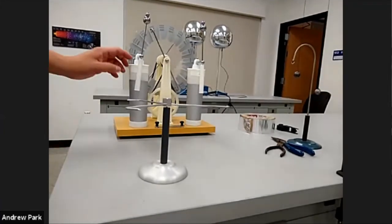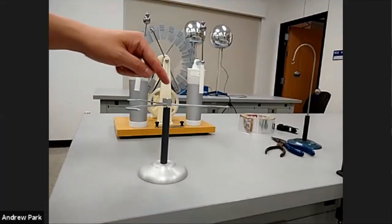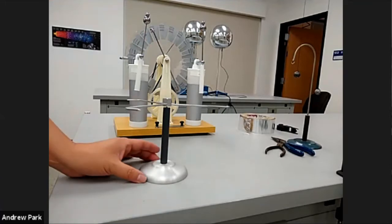Connect a wire from one of these two electrodes. There's a hole where I can connect it to this vane and see the vane turn. Let me do that.